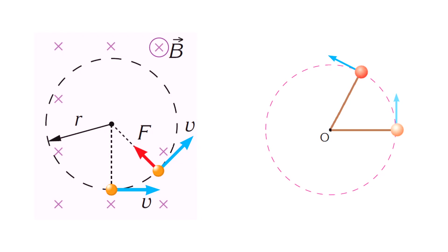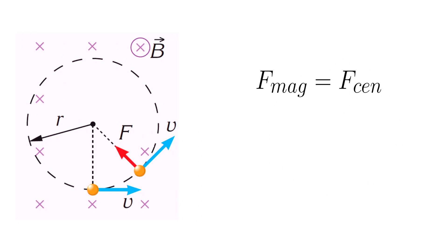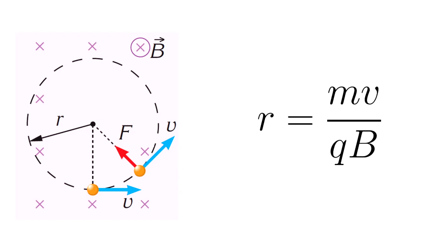The radius of the curved path can be found as follows. The magnetic force exerted on a moving charge equals the centripetal force. By substituting the expressions for magnetic force and centripetal force, we get qvB = mv²/r. The velocities cancel, leaving one v, and rearranging for radius gives r = mv / qB. This equation describes the radius of a charged particle's path, which depends on mass, speed, amount of charge, and the strength of the magnetic field.